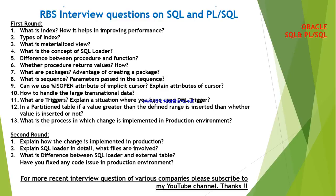The next question is: how to handle write transaction data? By using triggers we can handle those things. The 11th question is: what are triggers? Explain a situation where you have used a DML trigger. When you talk about a DML trigger, whenever insert, update, or delete operations occur in the database, the DML trigger will be automatically fired. Whatever trigger we create on a database table or view is called a DML trigger. If you create a trigger on a database or system level, then it will be called a system-level trigger.